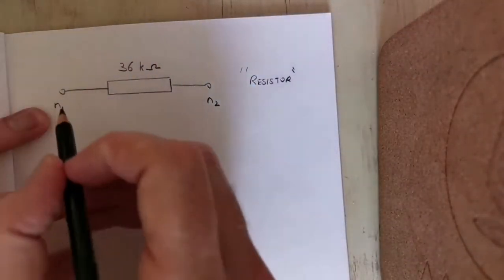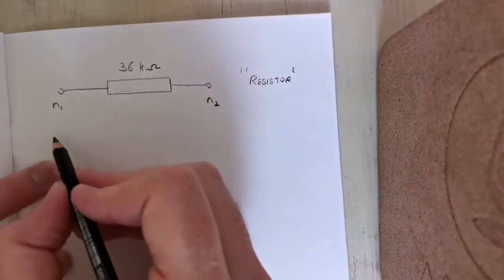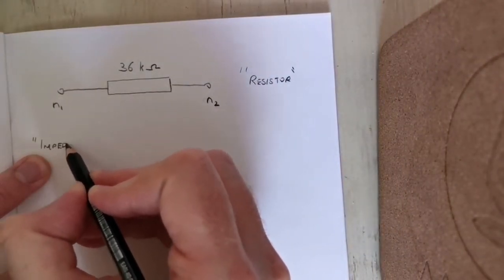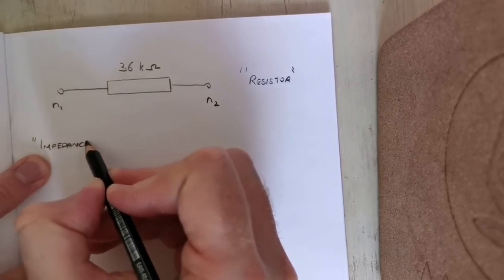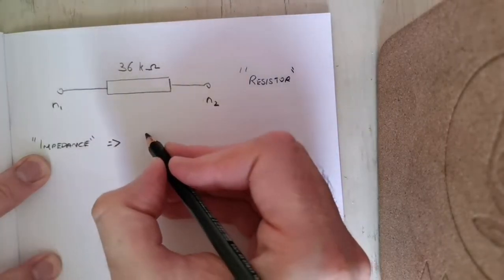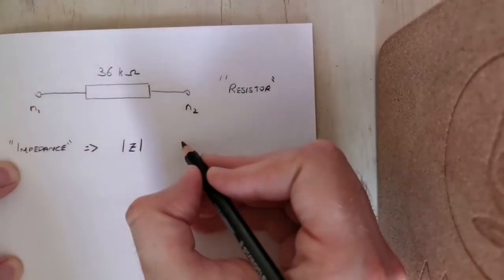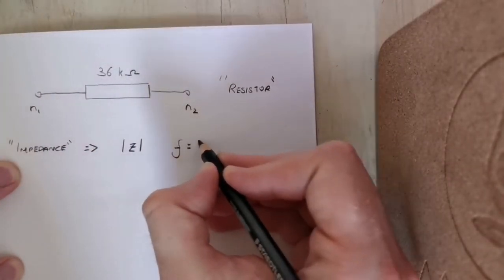What we're essentially trying to do here is work out what is the impedance of this resistor, or the magnitude of the impedance, if the frequency is 50 hertz.